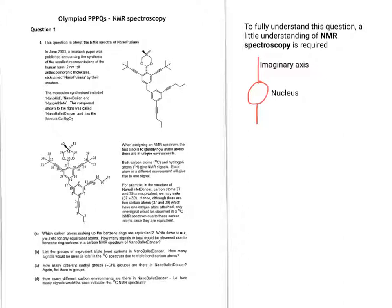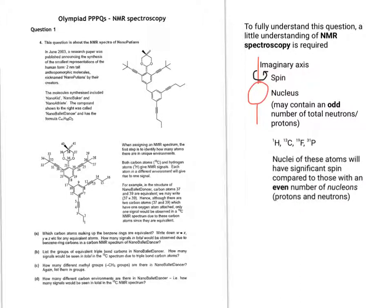If we take the nucleus of an atom and give it an imaginary axis, it can be imagined that the nucleus can potentially spin around this axis. Depending on the identity of the atom from which the nucleus comes, it may contain an odd number of total neutrons or protons. Some common examples are hydrogen, carbon-13, fluorine-19, and phosphorus-31.